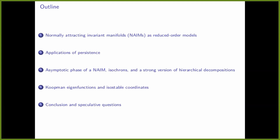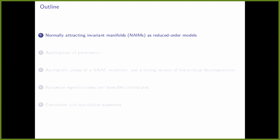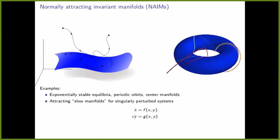You've probably seen NIMs before. A NIM is in particular an exponentially stable invariant manifold — a nice smooth surface inside state space that is invariant in the sense that if you start on that manifold, you never leave it. Familiar examples include exponentially stable equilibria or fixed points, limit cycles or periodic orbits, and center manifolds of fixed points.